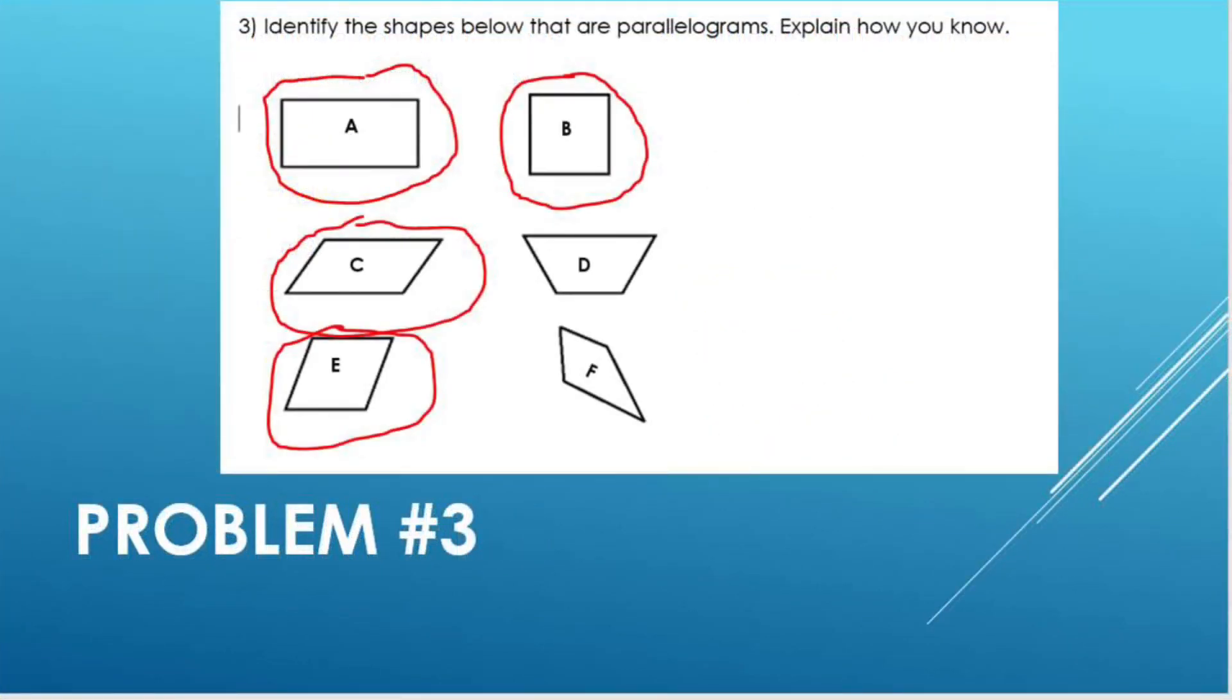Number three, the shapes that are parallelograms are A, B, C, and E. These are parallelograms because each one of these shapes has two sets of parallel sides. When we have a set of parallel sides, that means that those sides will never meet if they are extended forever.